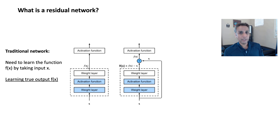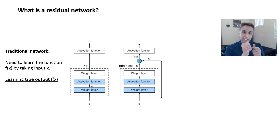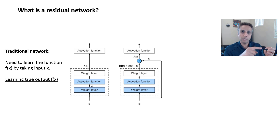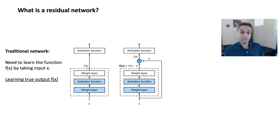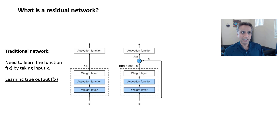In a traditional network, you're mapping your x directly to the output — f(x). Think of this as a black box: input x comes in, you have an output, and you're mapping your input to the output by updating the weights. So x is directly mapped to f(x) — you're learning how to map your input to the output.